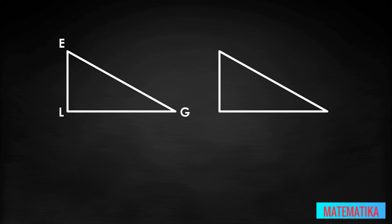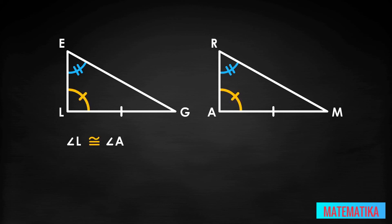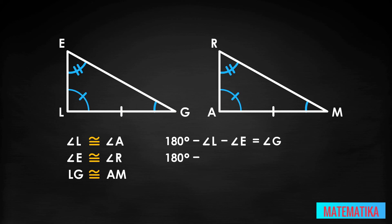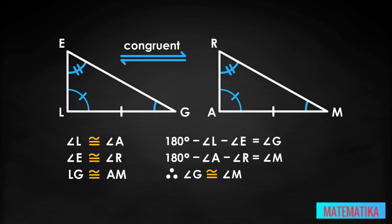Let's look at an AAS theorem example. Here we have two new triangles: triangle LEG and triangle ARM. Notice all the little hatch marks indicating congruent angles and sides. Angle L is congruent to angle A, angle E is congruent to angle R, and side LG is congruent to side AM. Knowing the interior angles are congruent as listed, what else do we know? That's right — we know angle G is congruent to angle M, because 180 degrees minus angle L minus angle E equals angle G, and 180 degrees minus angle A minus angle R equals angle M. Therefore, angle G is congruent to angle M. Now you can deploy the ASA postulate and declare the two triangles congruent, since angle L is congruent to angle A, side LG is congruent to side AM, and angle G is congruent to angle M.